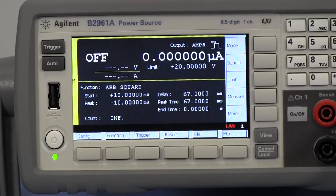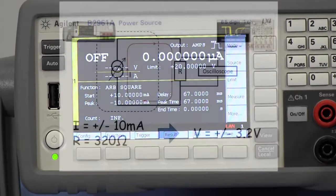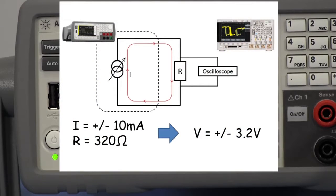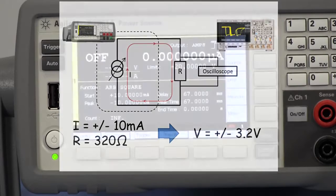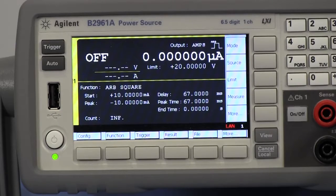This B2961A has been set up already in order to output a similar wave I demonstrated earlier. So, I can output it by pressing output and trigger buttons.